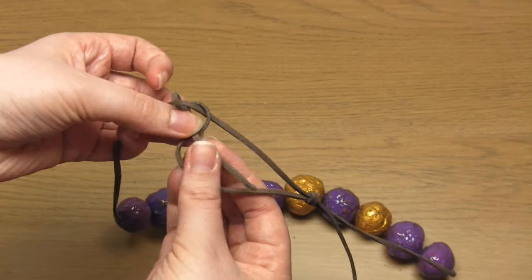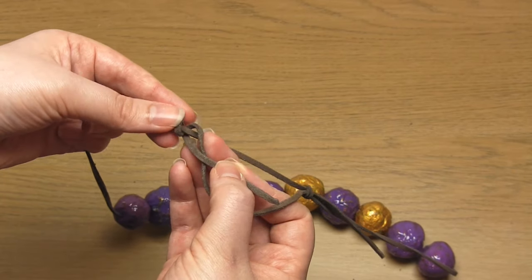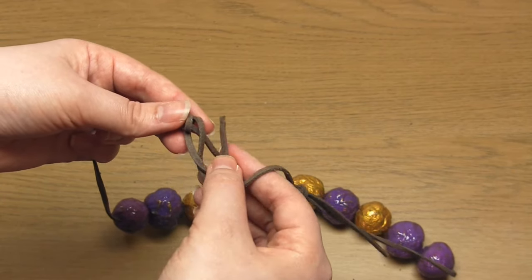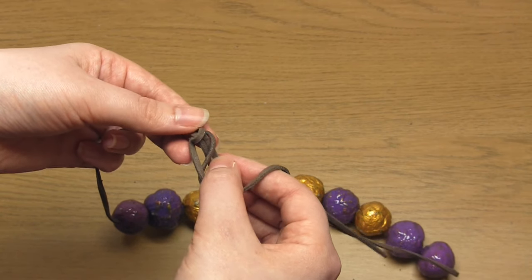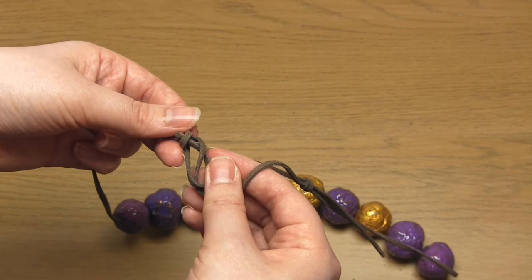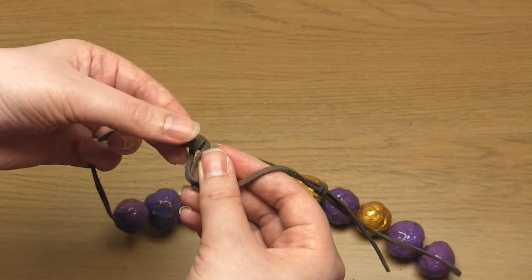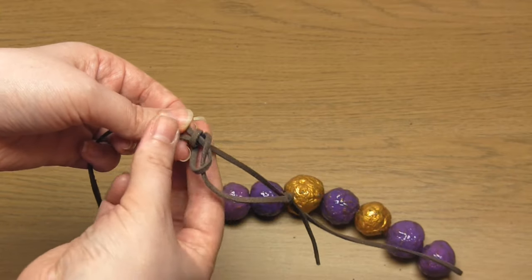Then bring it back to the right hand side. And then feed it through the two loops that you've just made going from right to left. Then just tighten the cord.